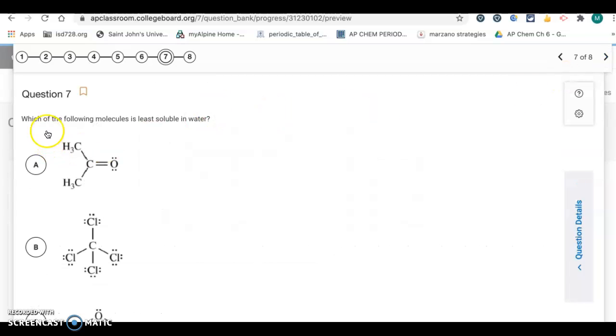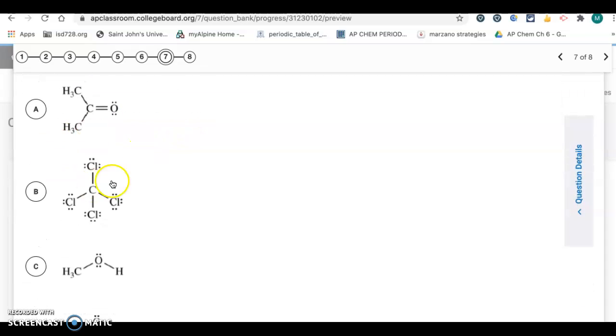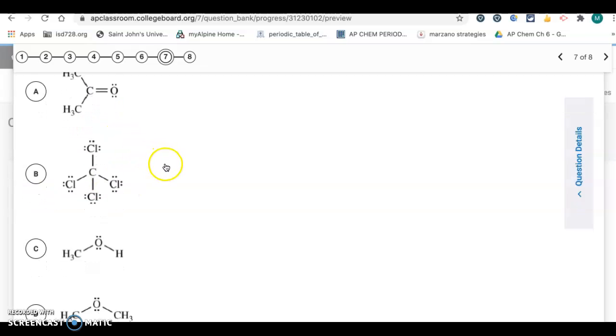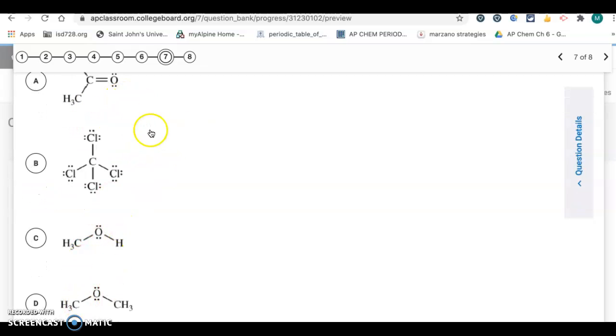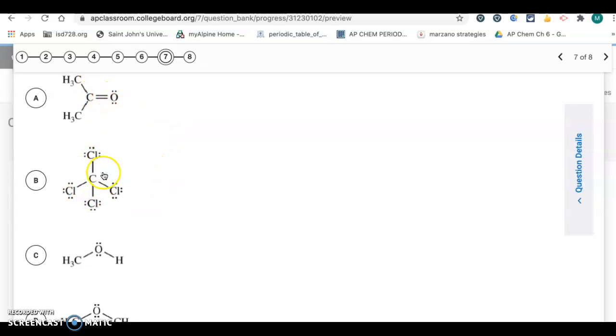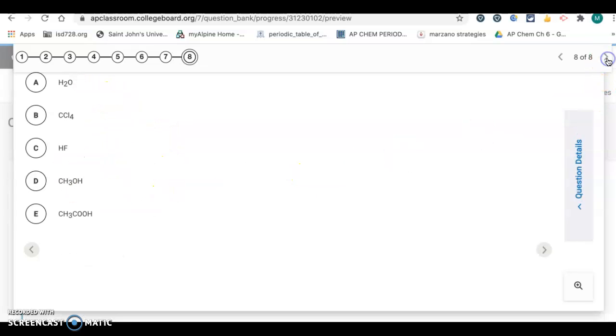Okay, anyway, number seven. Which of the following molecules is least soluble in water? So, this is the like-dissolves-like rule. So, water is polar. So, we want to find the one that's least polar. So, letter B. This is going to be a non-polar molecule because of symmetry. So, it's going to be letter B. All the other ones have that OH. It's bent. There's a polar bond to it. But B is non-polar.